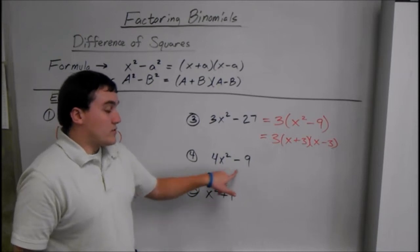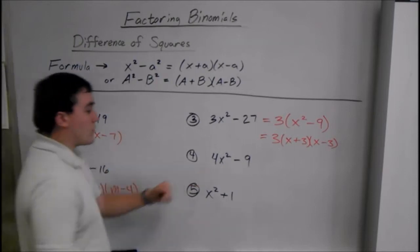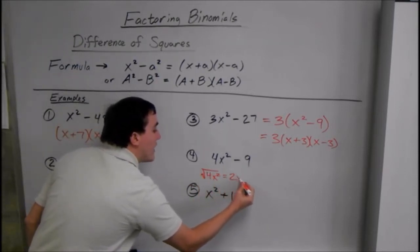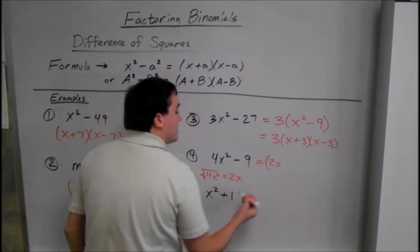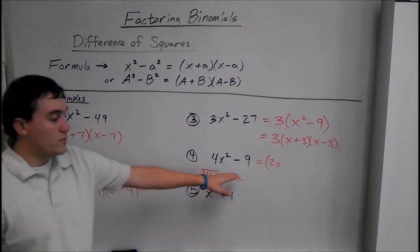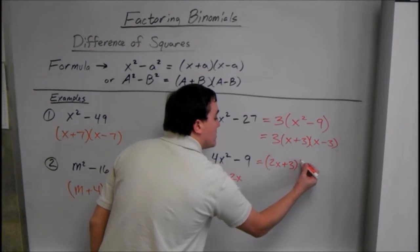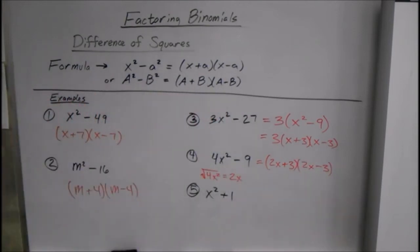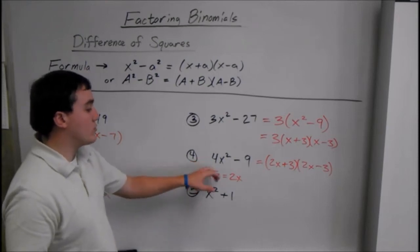These two terms don't have anything in common, but we still have to treat it the same way as any of these. The square root of 4x squared is 2x. So that's going to go first in our parentheses. And then we have plus or minus the square root of 9 is 3. So 2x plus 3 and 2x minus 3 would be our answer for that. So it doesn't just have to be x here. It could be whatever.